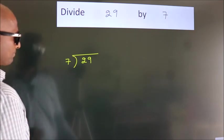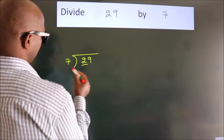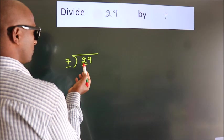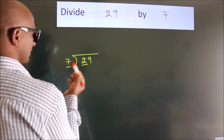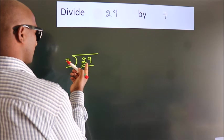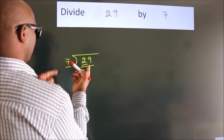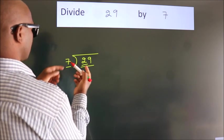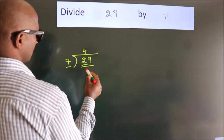Next. Here we have 2. Here 7. 2 is smaller than 7, so we should take 2 numbers: 29. A number close to 29 in the 7 table is 7 times 4 is 28.